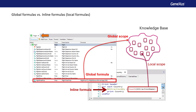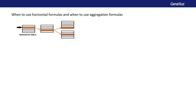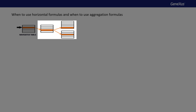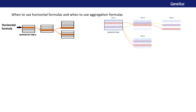The same applies if inline formulas are used in the conditions tab of an object. The navigation of a formula determines whether it's a horizontal or aggregation formula. When we have a formula that navigates a single record of a table, possibly accessing attributes of its extended table, we say it's a horizontal formula. If the formula accesses many records of a table, then it's an aggregation formula.